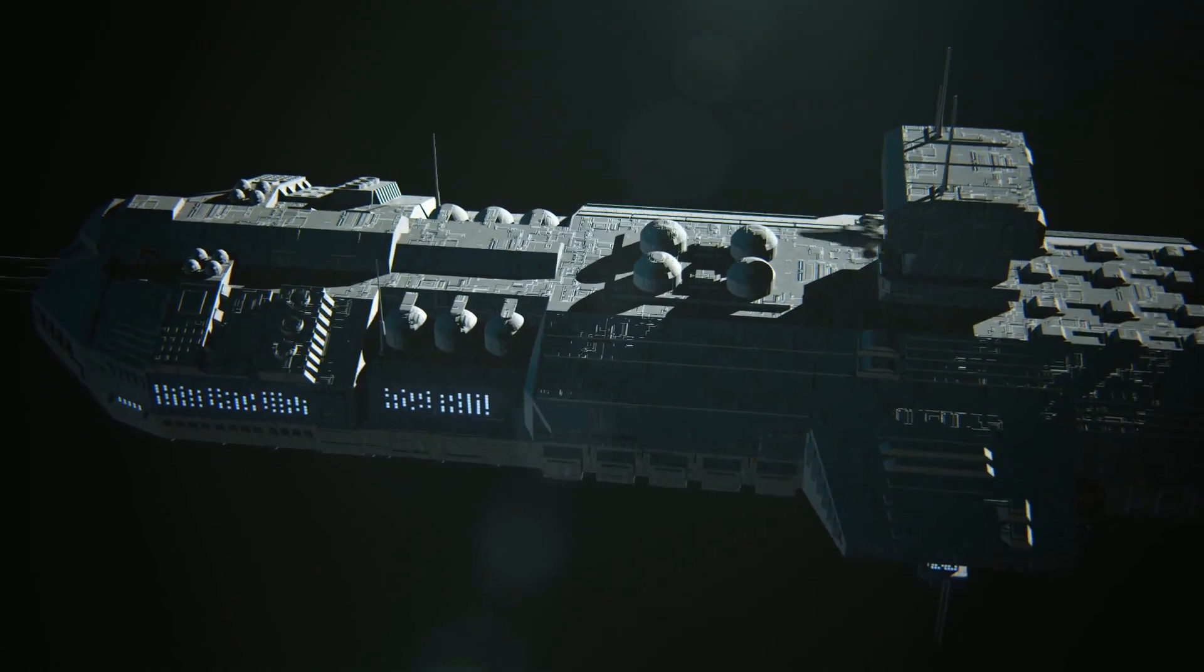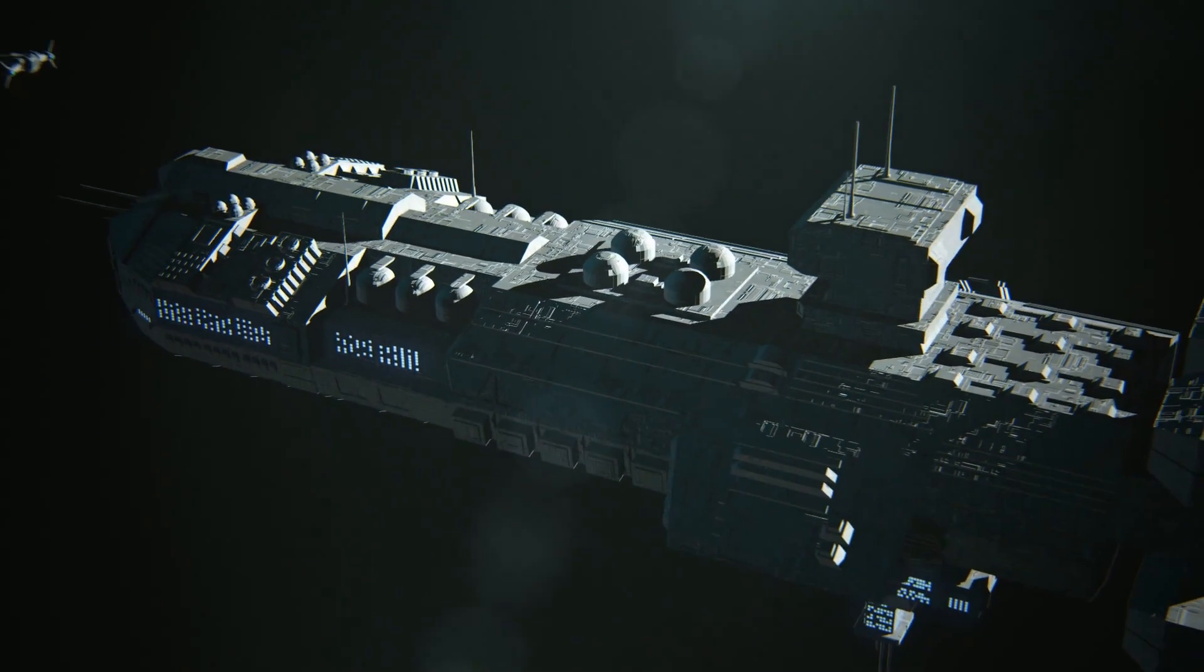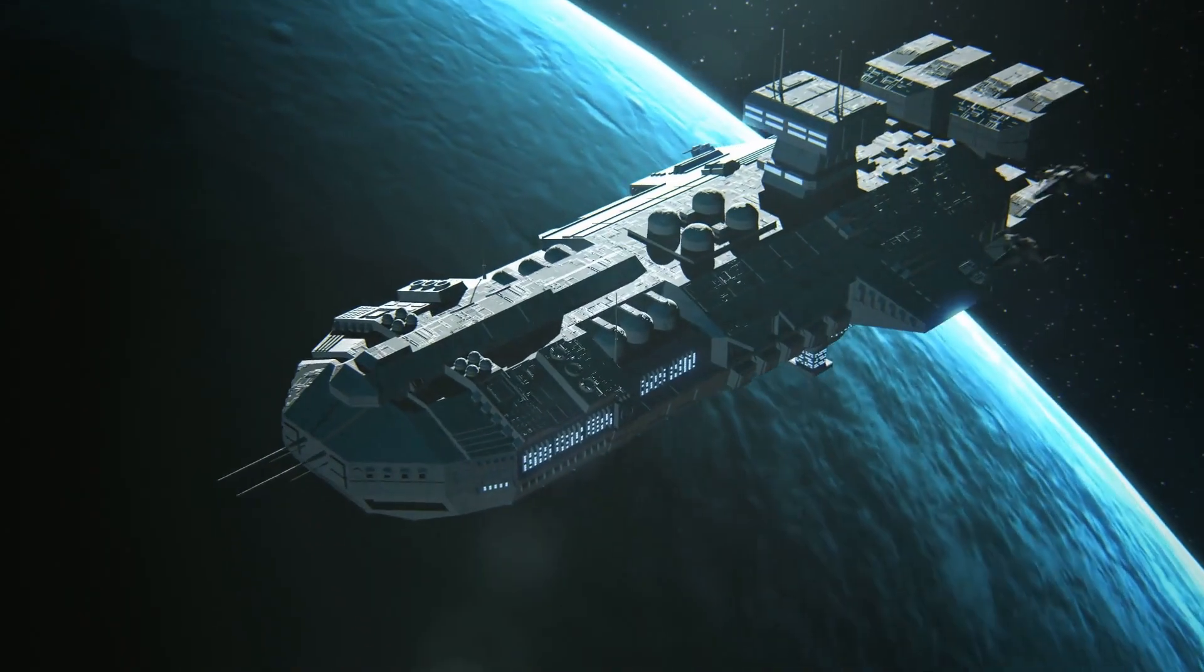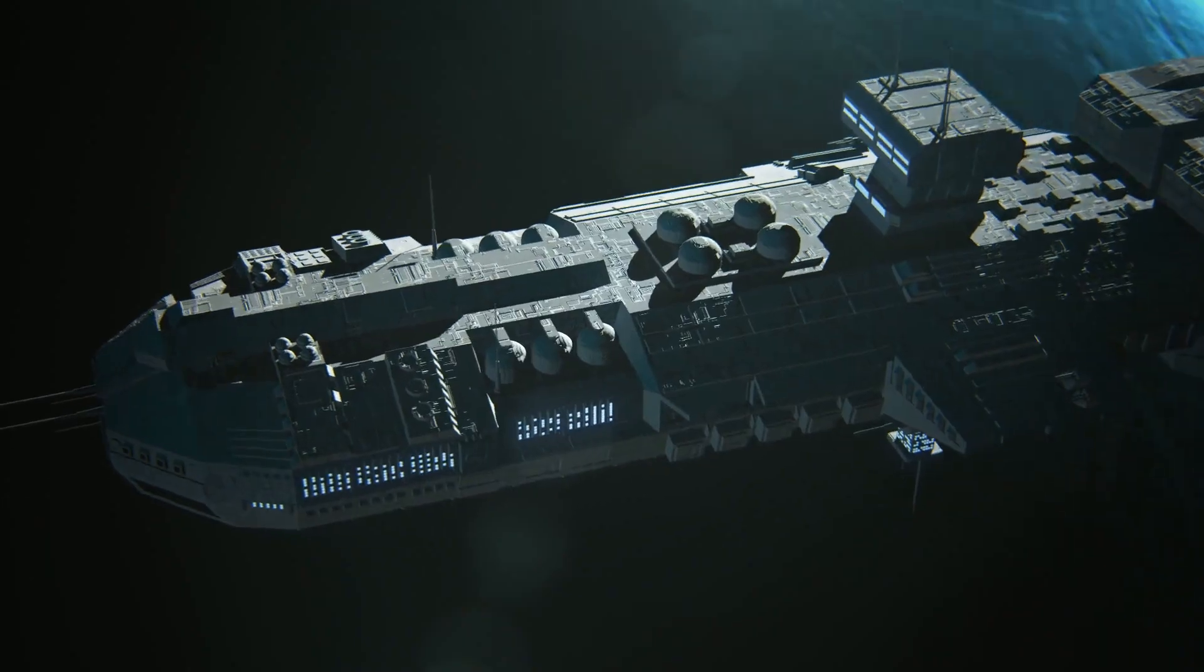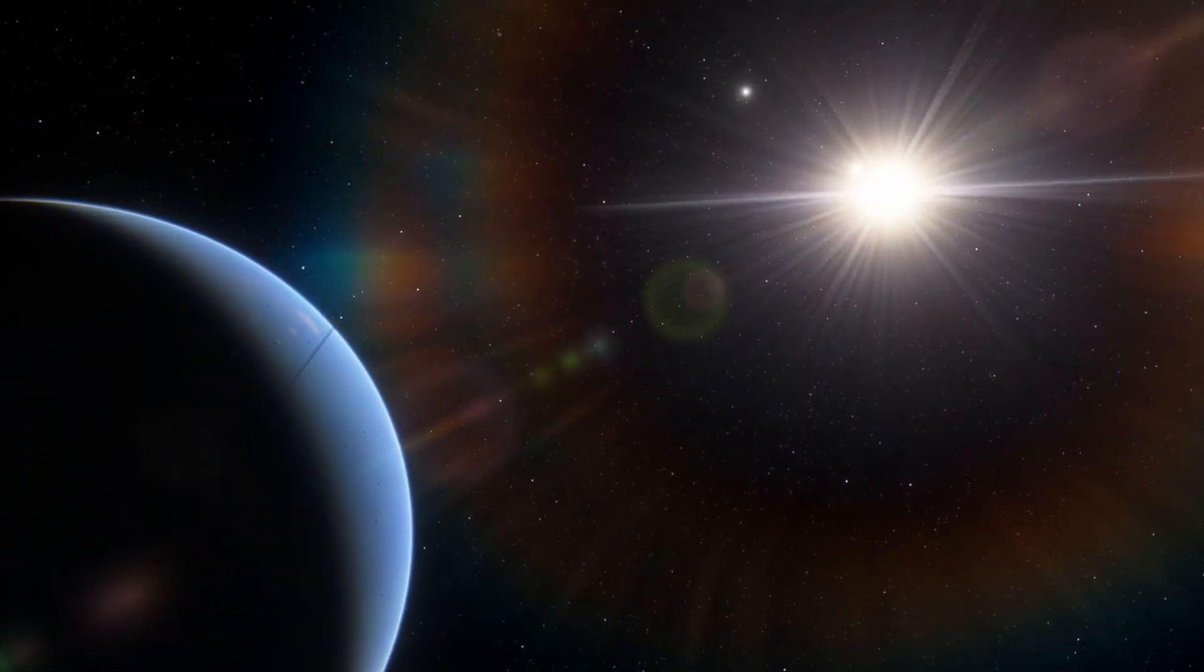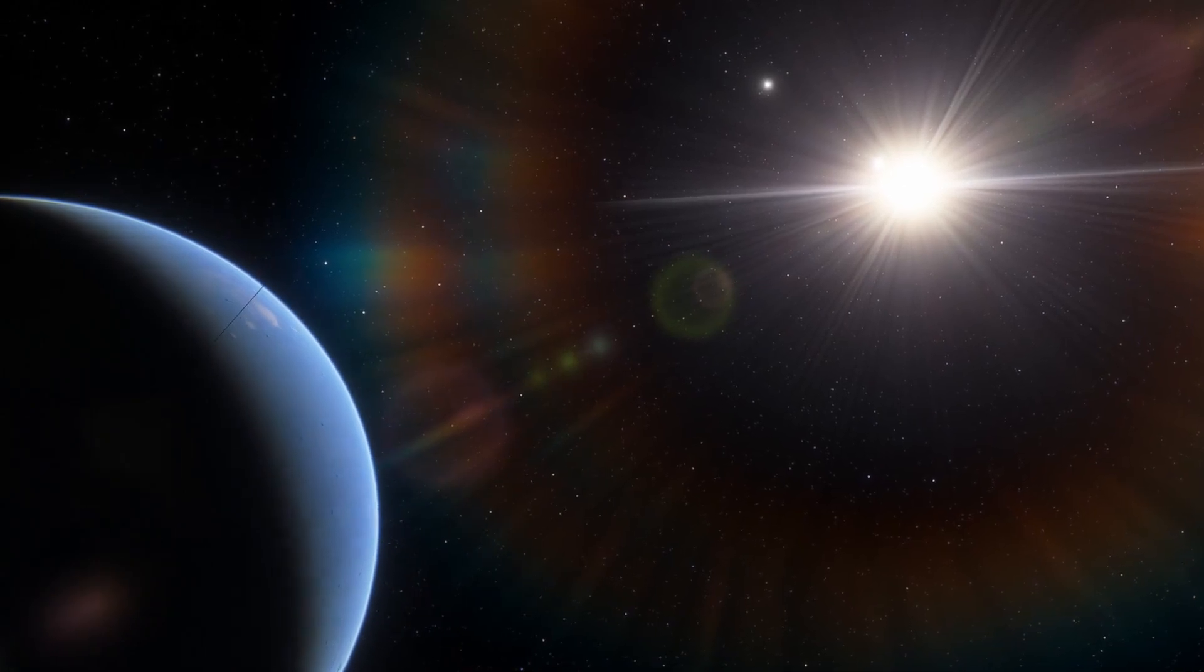At the speed of the New Horizons spacecraft, at about 59,000 kilometers per hour, it would take approximately 30 million years to get there. Kepler-452b orbits its star at a distance of 156 million kilometers.